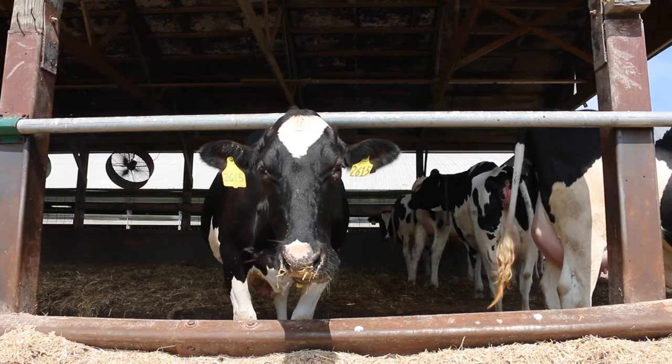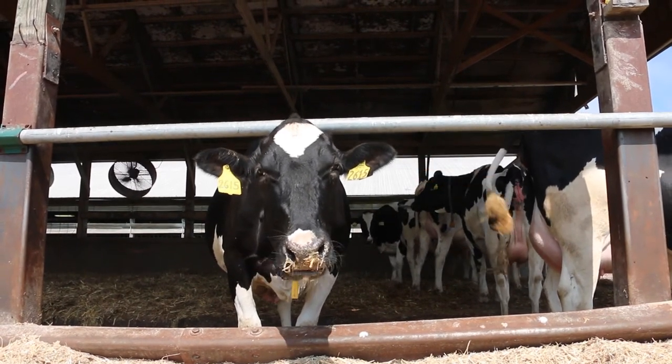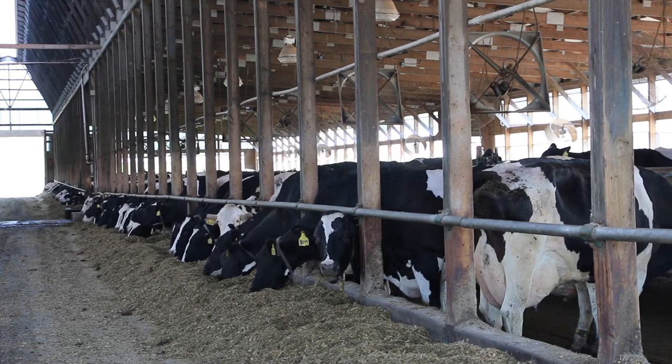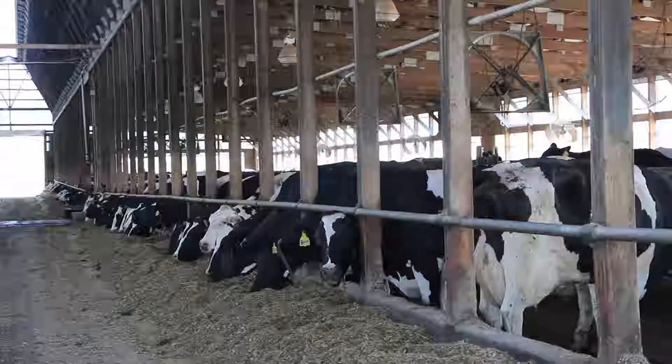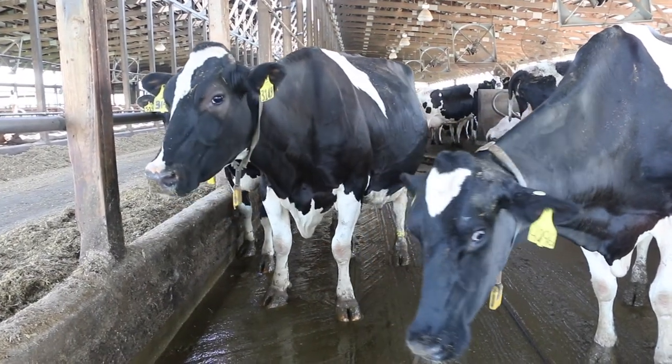With today's modern animal genetics and nutrition, animals convert feed energy into body mass, milk, or eggs more quickly, and thus they produce more heat per animal than in the past.